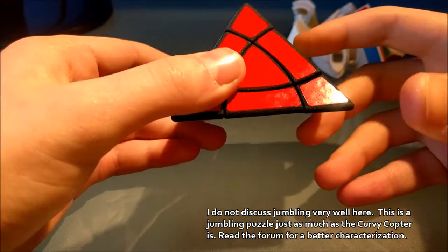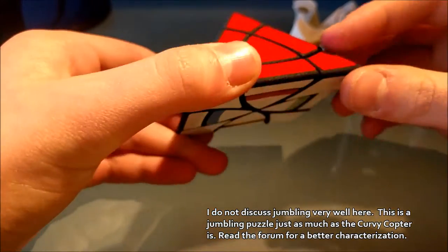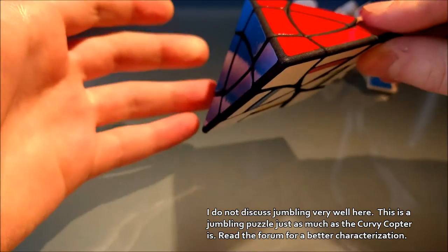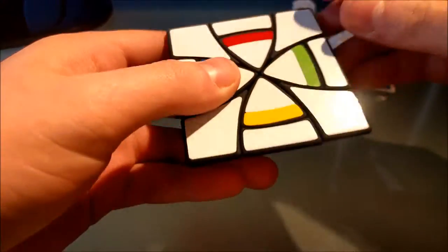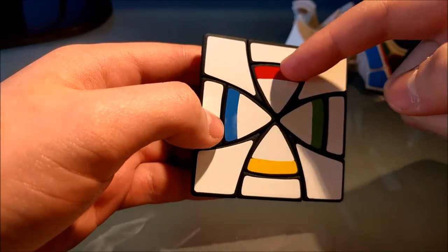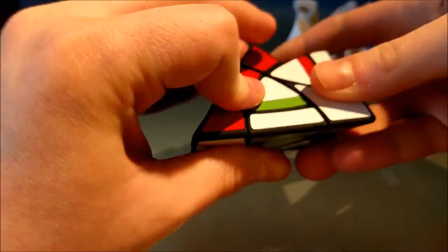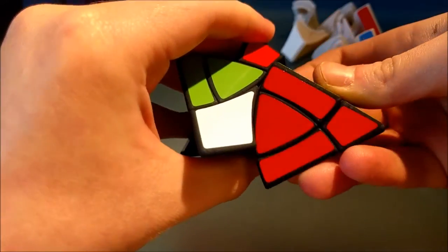Now, it is technically a jumbling puzzle, although there are no moves that make this puzzle seem like as much of a jumbling puzzle as something similar to the CurvyCopter. Now, I did, on the bottom, add these, I call them plus cuts, similar to a CurvyCopter plus, so I added these plus cuts on the bottom just for more scramble-ability, otherwise it would be a jumbling puzzle and it would not be able to be properly scrambled.